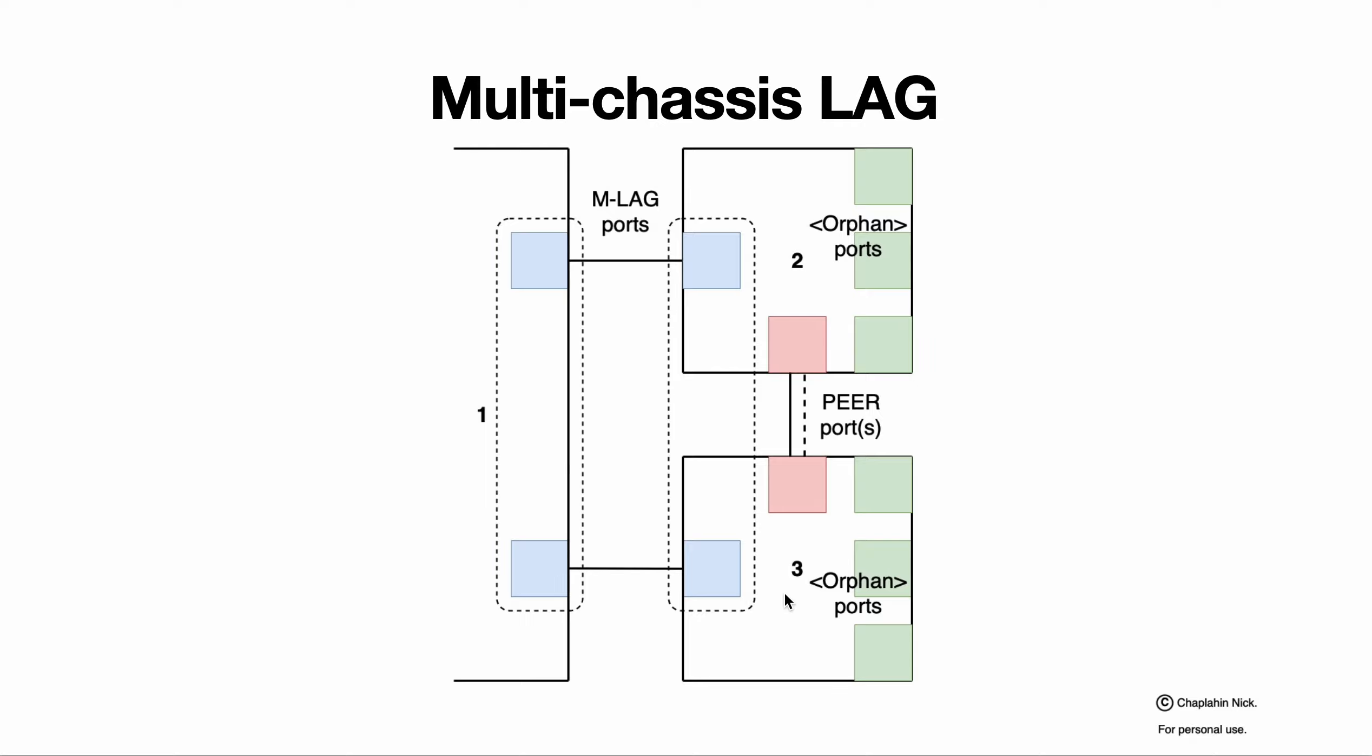And we have additional peer ports where an additional protocol is running. This protocol controls status and situation on those peer devices that are containing part of MLAG ports, exchanges information, configures those devices to manipulate traffic correctly, and controls status of MLAG ports in order to react to changes.